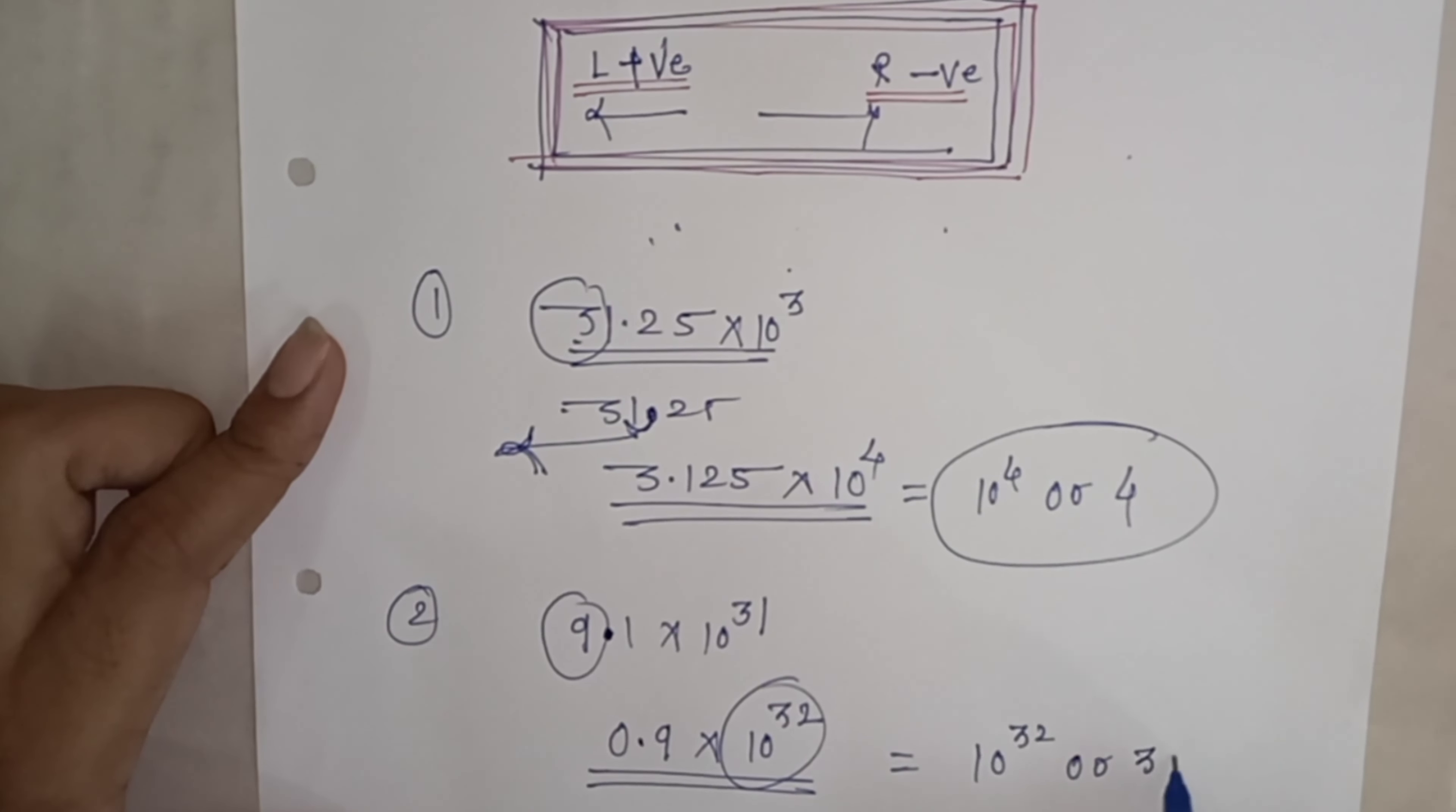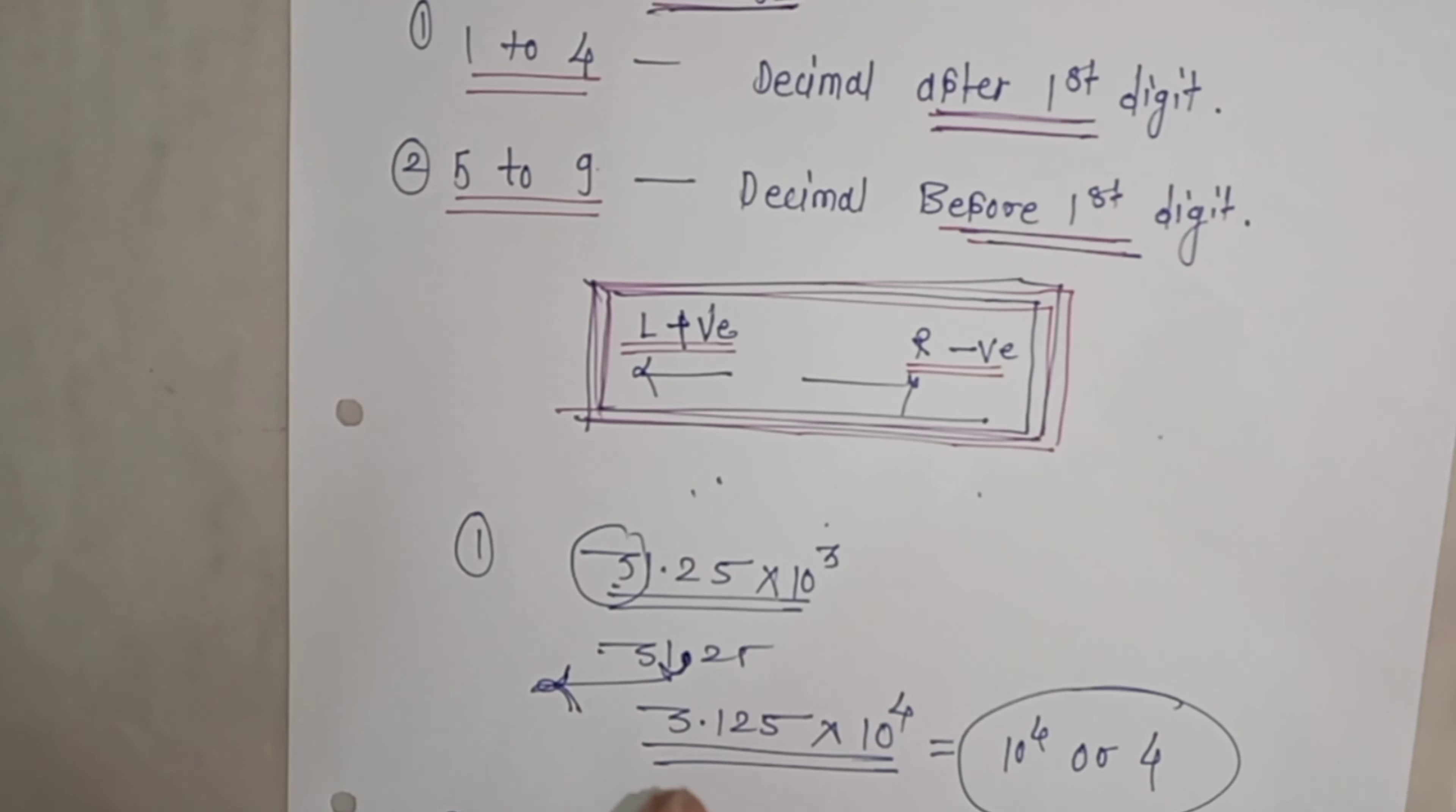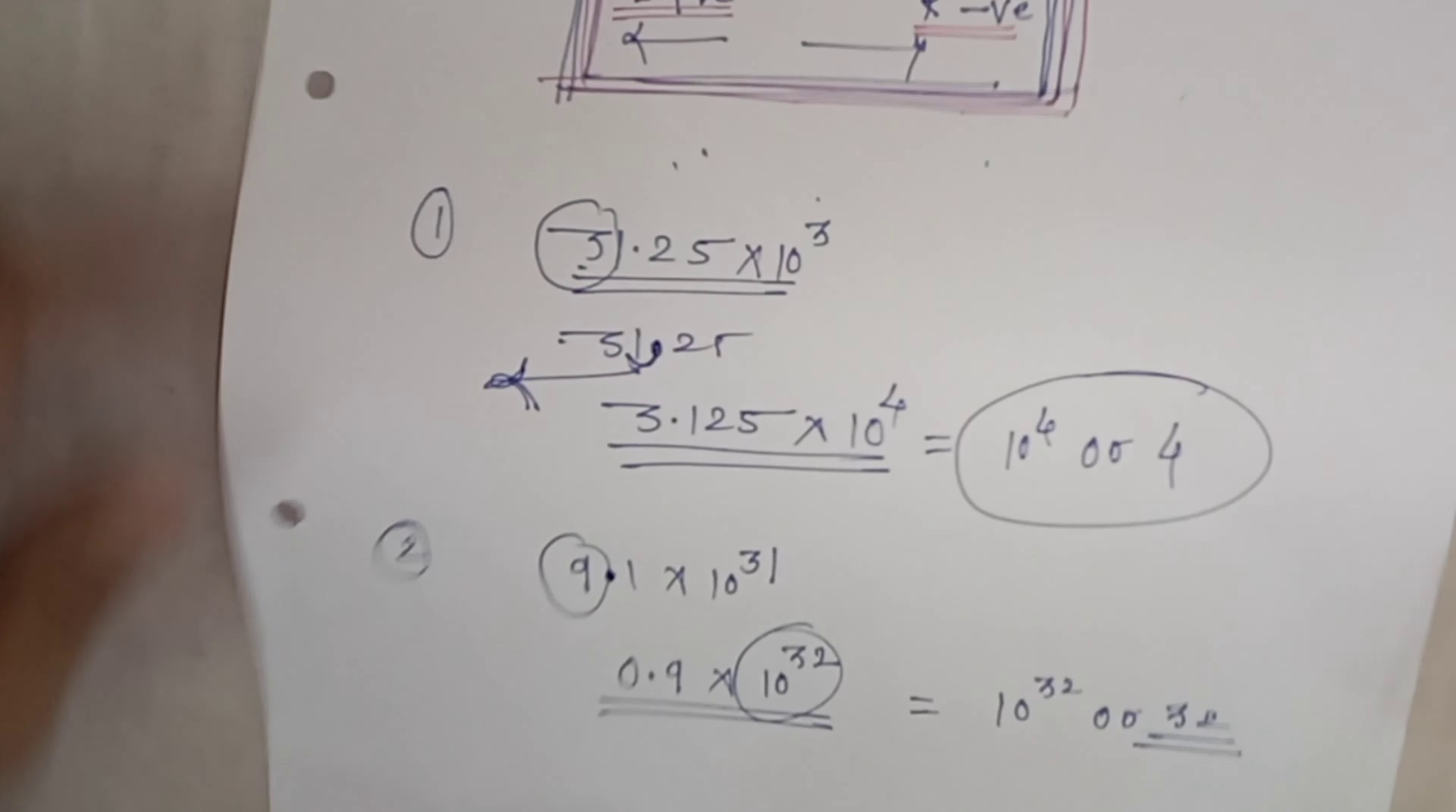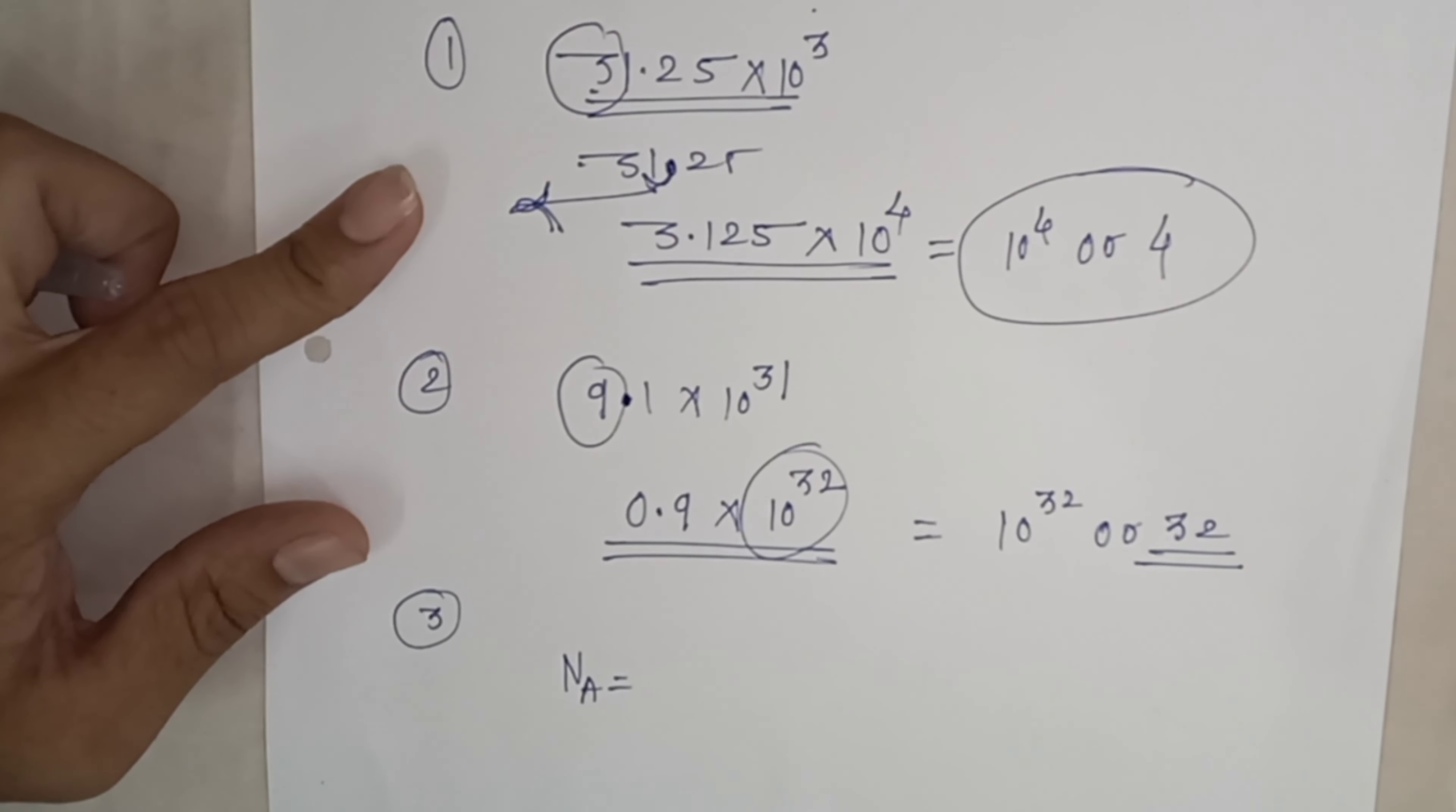I hope this is clear. The concept is: when the first digit is between 1 to 4, give decimal after the digit. When it's 5 to 9, give decimal before the digit. And when we move decimal, apply the appropriate sign.